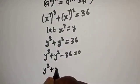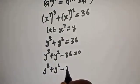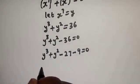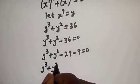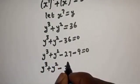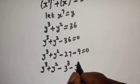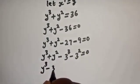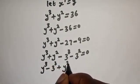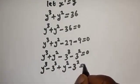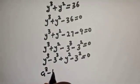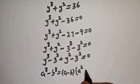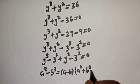Notice that y³ + y² − 36 can be rewritten by recognizing 36 = 27 + 9. We apply the difference of cubes rule: a³ − b³ = (a − b)(a² + b² + ab), grouping the expression as (y³ − 3³) + (y² − 3²) = 0.